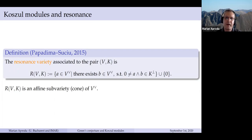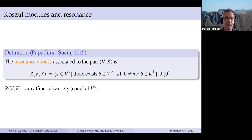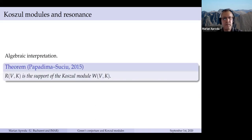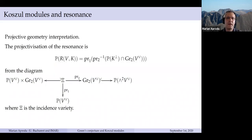The q-th graded piece of this S-module is the homology of the corresponding map, and that's a covariant functor — which explains why we prefer to say homology and not cohomology for this complex. If we fix the starting vector space, the bigger K is, the smaller the associated Koszul module is. The extreme cases are when K is the whole thing and you get zero, or K is zero and you get the kernel of the multiplication map. For the geometric part, the resonance variety is a cone by definition — the set of vectors in the dual of V such that there exists a B with A, where B is in K-perp and A and B are not collinear.